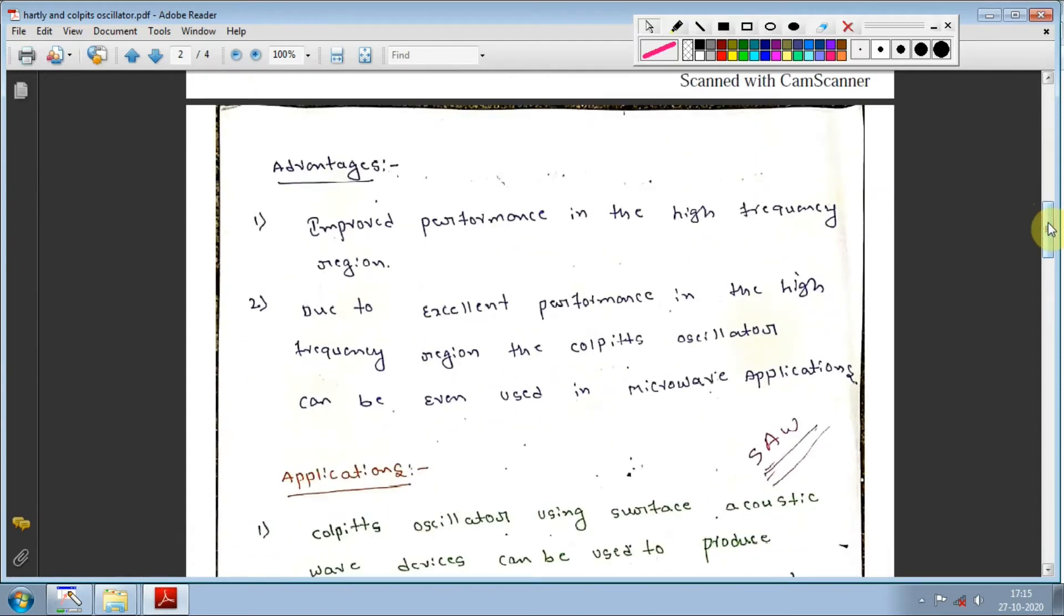Advantages of Colpits oscillator: First, improved performance in the high frequency region - in kilohertz, megahertz, and gigahertz ranges, there are fewer fluctuations. If you design a 10 megahertz oscillator, Colpits will produce close to 10 megahertz with minimal variation. Due to excellent performance in the high frequency region, Colpits oscillator can be used in microwave applications with millimeter waves.